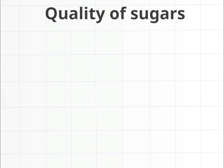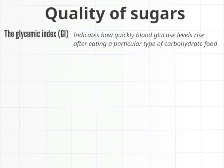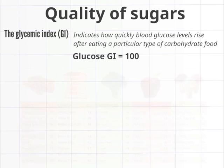Quality of sugars — Definition of the glycemic index: The glycemic index, or GI, indicates how quickly blood glucose levels — that is to say blood sugar — rise after eating a particular type of carbohydrate food. The effects that different carbohydrate foods have on blood glucose levels vary considerably. By definition, glucose has a GI of 100.